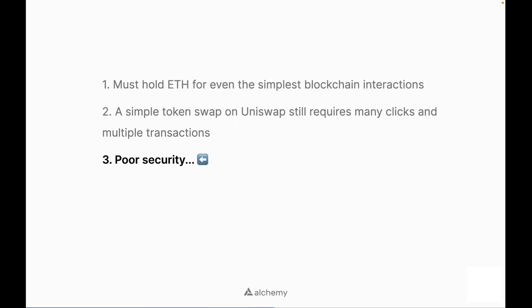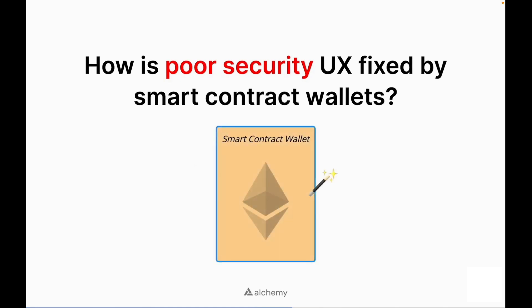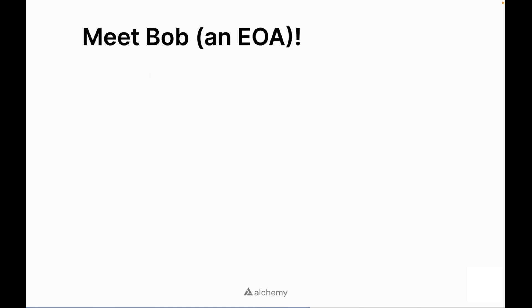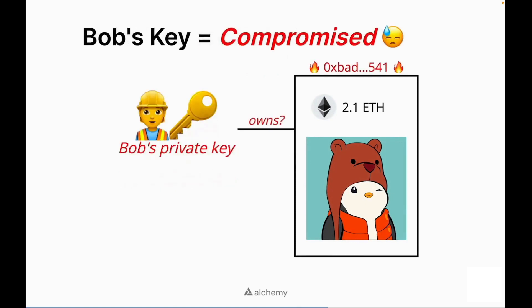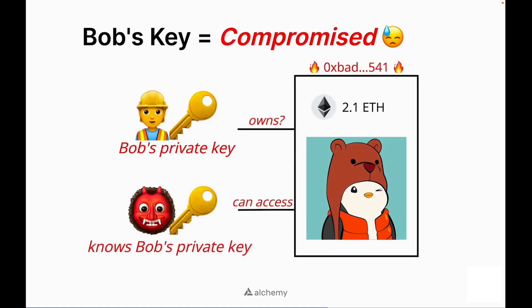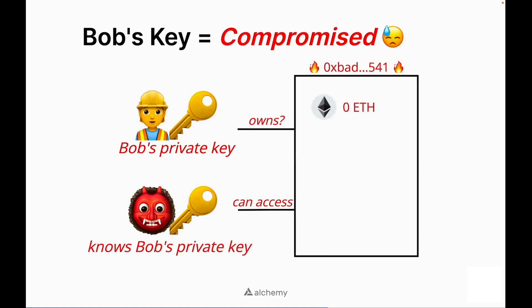Out of the three UX pain points we identified, let's do a deep dive on one: how is poor security UX fixed by smart contract wallets? As an example, meet Bob, who is an EOA. Bob's private key directly owns a balance of 2.1 ETH and a valuable Pudgy Penguin. The thing is, if Bob's key becomes compromised, so does his ownership — anyone with his private key can access his assets and drain his wallet, essentially burning his address forever.